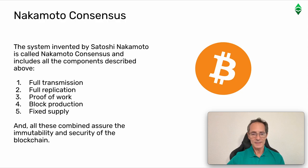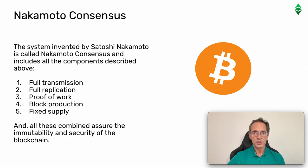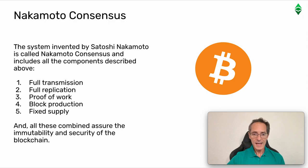Nakamoto consensus. The system invented by Satoshi Nakamoto is called Nakamoto consensus and includes all the components described above: one, full transmission; two, full replication; three, proof of work; four, block production; five, fixed supply. And all these combined assure immutability and security of the blockchain.